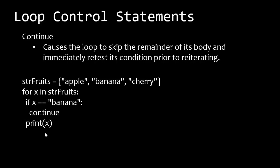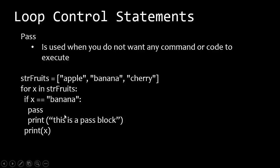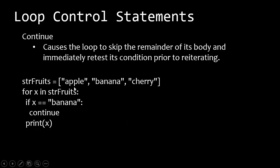Continue causes the loop to skip the remainder of its body and immediately retest its condition prior to reiterating. So for x in strfruits, if x equals banana, continue — skip the rest of it, but go back up to the next one. The result of this would be that it prints apple and prints cherry, but does not print banana because it says to continue and not print. That's called a continue control statement. Every once in a while you may want to use them.